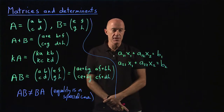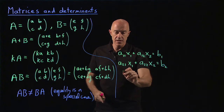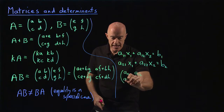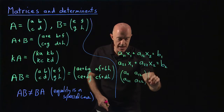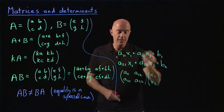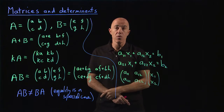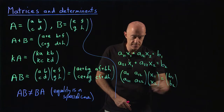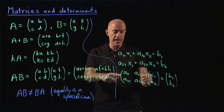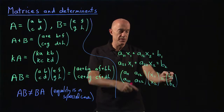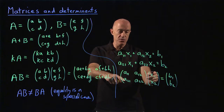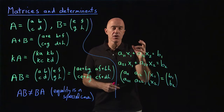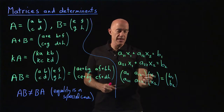We can use matrix multiplication to write this as a matrix equation: the matrix A11, A12, A21, A22 times the column vector x1, x2 — a two by one vector with two rows and one column — equals the column vector B1, B2. Going through the multiplication: A11·x1 + A12·x2 = B1 is the first equation, and A21·x1 + A22·x2 = B2 is the second. So a system of linear equations can be written as a matrix equation.